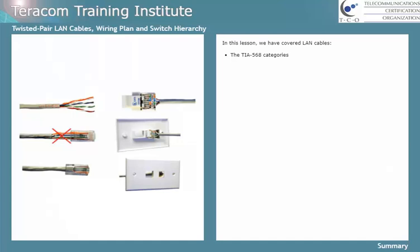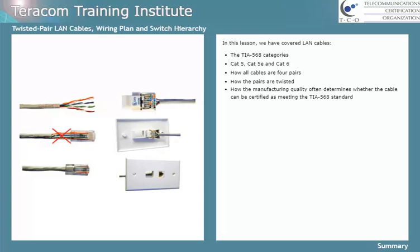In this lesson, we've covered LAN cables, the TIA 568 categories, understanding Cat5, Cat5e, and Cat6, how all cables are four pairs, how the pairs are twisted, how manufacturing quality often determines whether the cable can be certified as meeting the TIA 568 standard, and we discussed practices for wiring buildings.